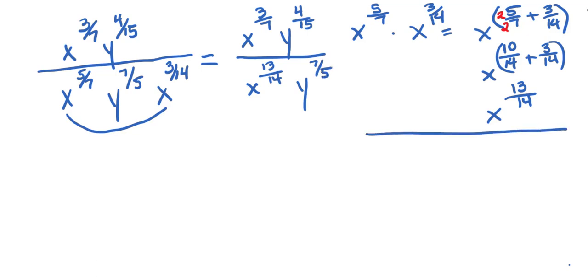Now I'm going to work with them as a quotient or a fraction. And your rule is keep the base and subtract exponents. So for my X's, I have 3 7ths minus 13 14ths.